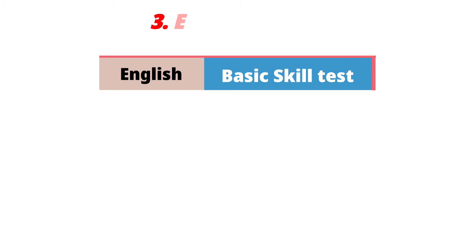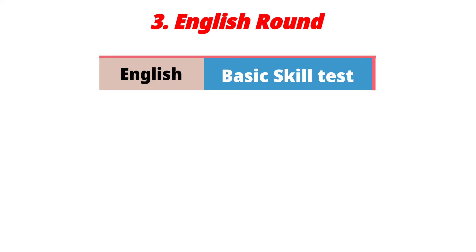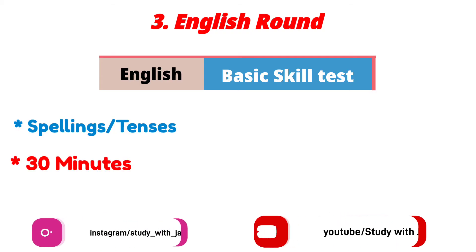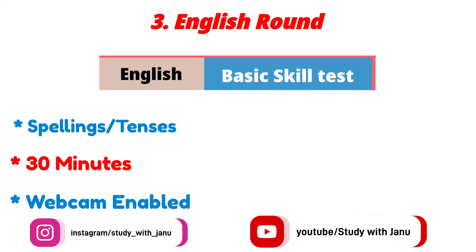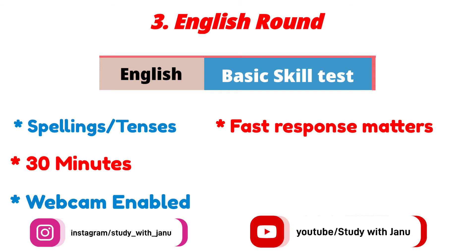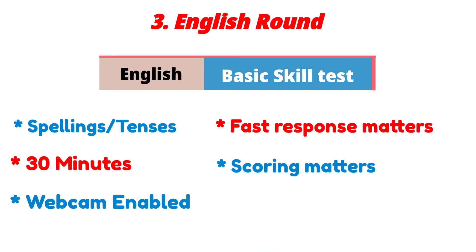The next round is the English round — if you get qualified in the gaming round then you will be getting access to the English round. This is as simple as you need to have just basic English knowledge like basic spelling checks and tenses knowledge. You will be having a 30-minute time span, webcam enabled, and the main thing that matters is how fast you give response and the score. The results will be announced the next day.